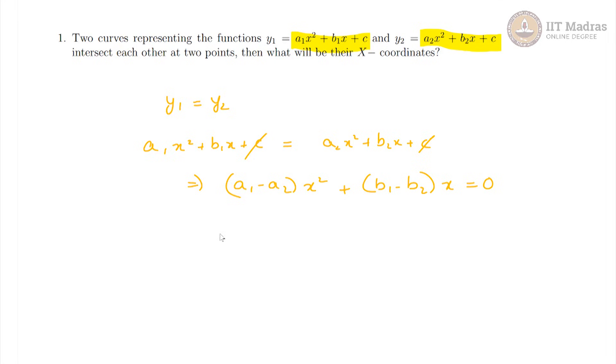This would imply this is x into a1 minus a2x plus b1 minus b2 is equal to 0.